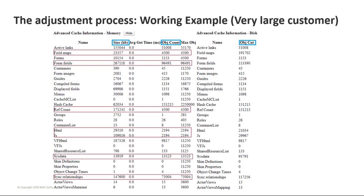Generally, having 100% of all objects in heap requires a lot of RAM. Because we leverage browser caching, we can target about 80%. I highlighted in blue all the categories that have a problematic limit — for example, field maps are limited to 4,500 objects in heap, but there are 191,000 objects on disk. That means spooling is happening constantly. Fortunately the size is pretty small, but ideally you don't want that to happen. You want to target about 80% in heap.